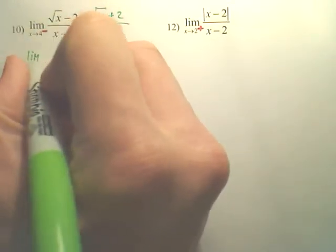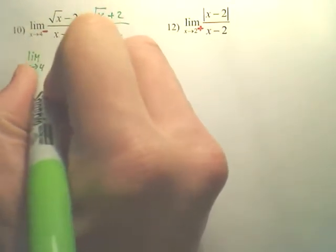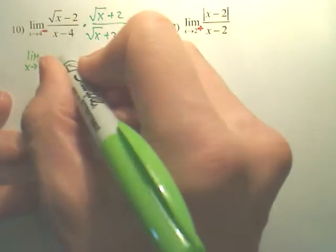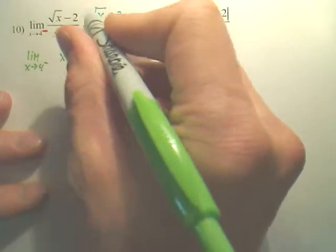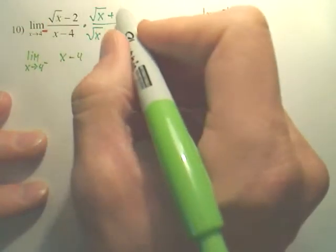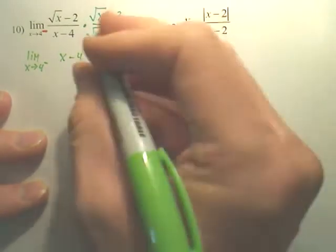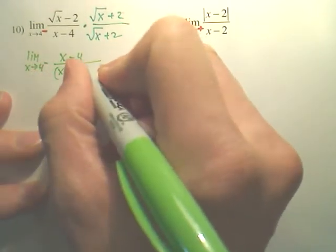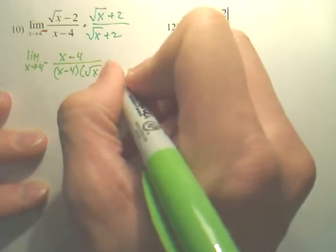And so you leave the word, the limit, in front. Okay, when I multiply these, I do a FOIL, and you're going to end up with x, and then negative 2 times 2 is negative 4. And because this times this, and this times this, will cancel each other. Leaves you an x minus 4 here, and the square root of x plus 2 here.